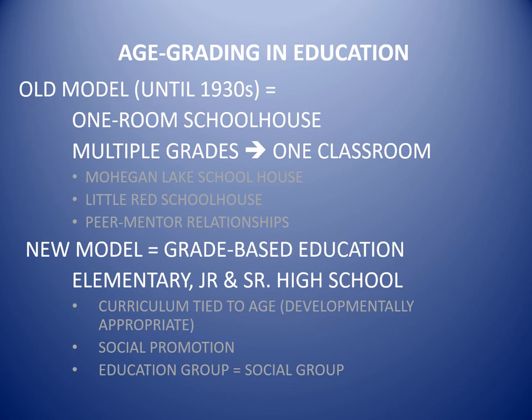The new model is a grade-based education system, which is much more common in the United States but has become more common throughout the world. This means you have schools like an elementary school with students of one age group, and a junior and senior high school, dividing school-aged children into different segments. Curriculum is tied to age — we talk about developmentally appropriate curriculum, meaning we don't teach certain subjects at certain ages even if students are cognitively capable of doing the work.